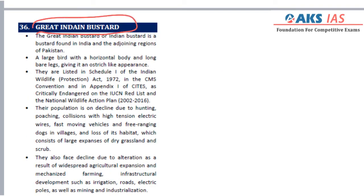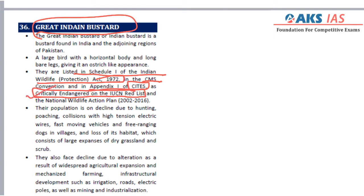The next topic is the Great Indian Bustard. It is an important bird to be conserved and is listed in Schedule I of the Wildlife Protection Act of 1972. It is also protected under the Convention on Migratory Species in Appendix I. It is critically endangered in the IUCN red list, meaning there is a high chance it is going to be extinct. Much more action is needed to save the Great Indian Bustard.